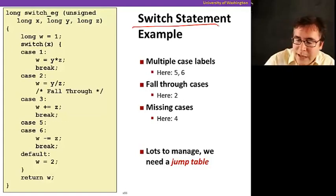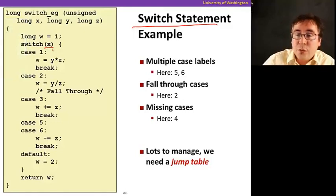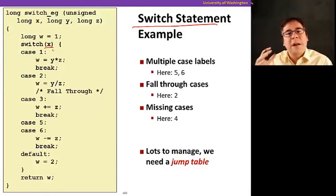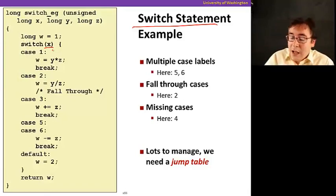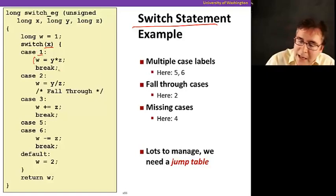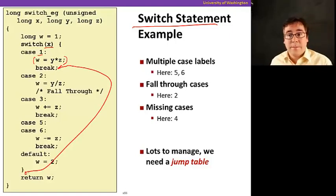The way switch statements work in C is as follows. Here I have an example. If I say switch x, what I'm saying is that there'll be a bunch of options that, depending on the value of x, I'm going to execute a different piece of code. If x happens to be set to 1, I'm going to execute this piece of code here. The break statement says that this piece of code is going to be executed, and then we're going to stop and continue executing past the end of the switch statement.